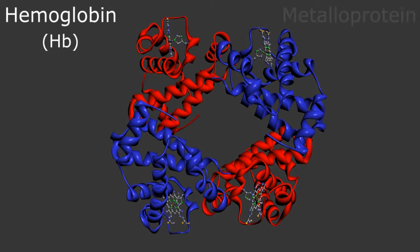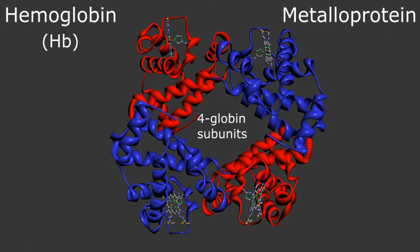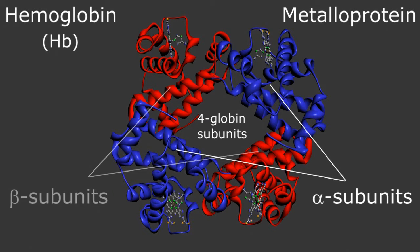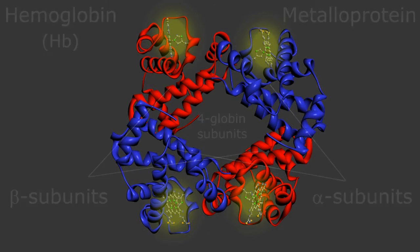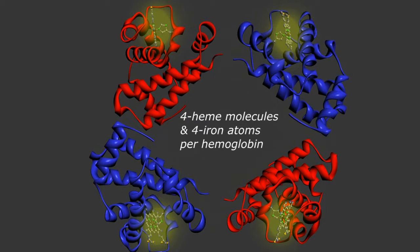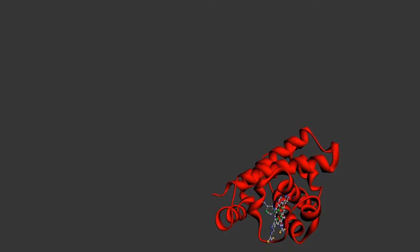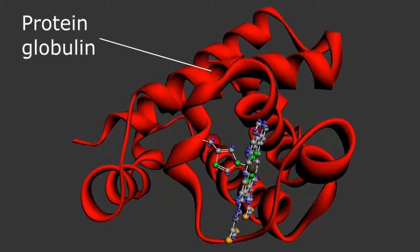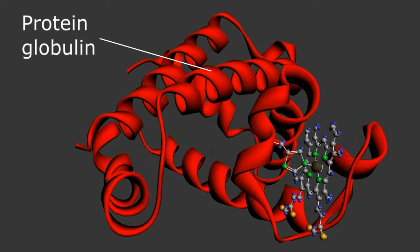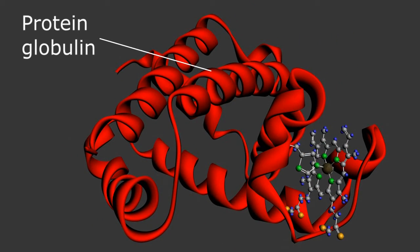Mammalian hemoglobin is a metalloprotein consisting of four globin subunits — two alpha and two beta — each of which houses the iron-containing heme molecule. There are four heme molecules and four iron atoms per hemoglobin. To simplify a little bit, let's take a closer look at one of the four subunits.